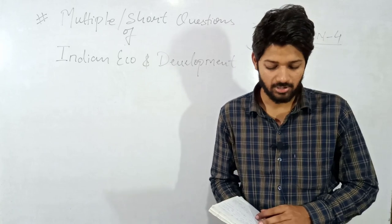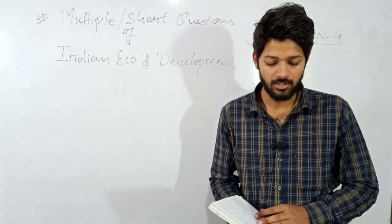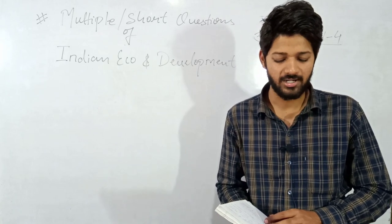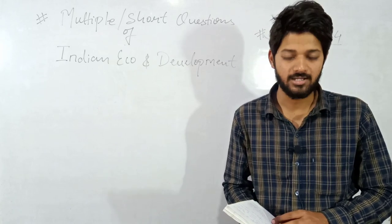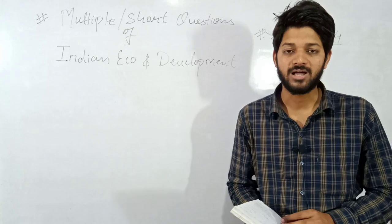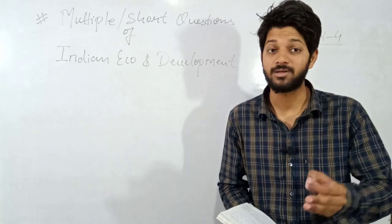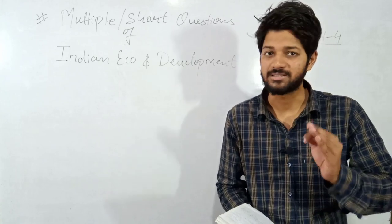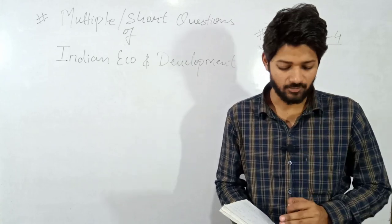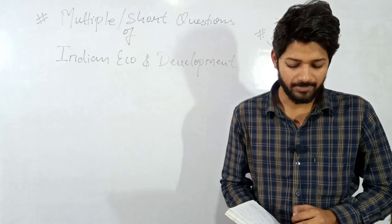The first question is: British rule introduced railways in India in which year? The answer will be 1853. The second question is: the opening of the Suez Canal served as a direct route for ships operating between which countries?